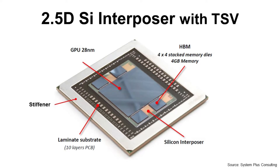2.5D looks like this. It is the packaging technology using a silicon interposer to connect dice on it. The silicon interposer has TSV — through silicon via — for vertical electrical interconnection. This silicon interposer with dies is placed on a package substrate to make the package.